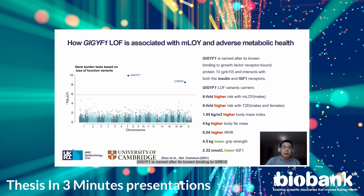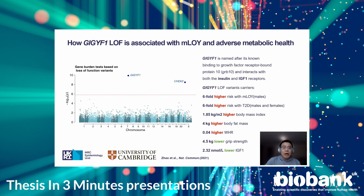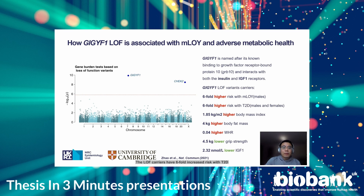GIGAF1 is named after its known binding to GRB10 and interacts with both insulin and IGF1 receptors. Therefore, we hypothesize that loss of function alleles may also impact metabolic health. We conducted the GIGAF1 burden test across metabolic health-related traits in both men and women. This long-neglected gene, mentioned by only eight papers in PubMed, has significant adverse effects on metabolic health. Loss of function carriers have six-fold increased risk of type 2 diabetes, higher BMI, body fat mass, and waist ratio, but lower grip strength and IGF1 levels.